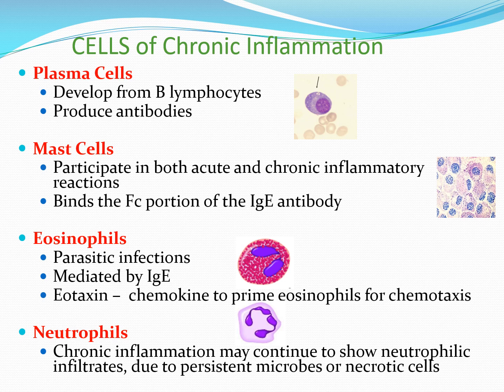Eosinophils predominate in parasitic infections mediated by IgE antibodies; the main chemotactic factor recruiting them is eotaxin. Neutrophils, the main cell type of acute inflammation, are also present in chronic inflammation but do not survive beyond about 24 hours and are replaced by monocytes. While neutrophils are the main cells of acute inflammation and macrophages, lymphocytes, and plasma cells the main cells of chronic inflammation, overlap between the two types can occur.